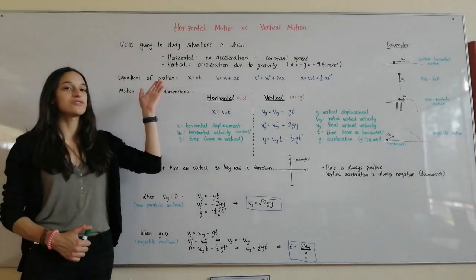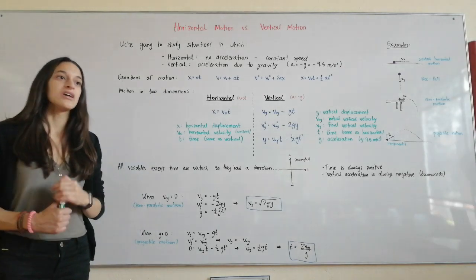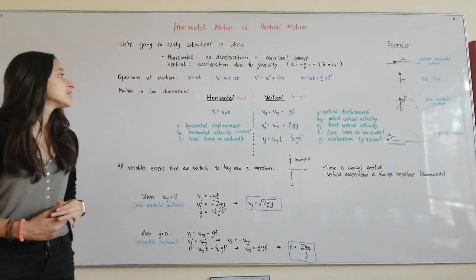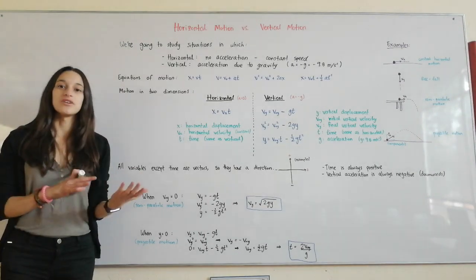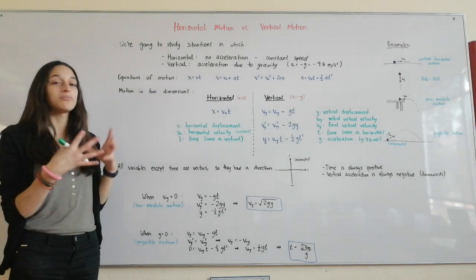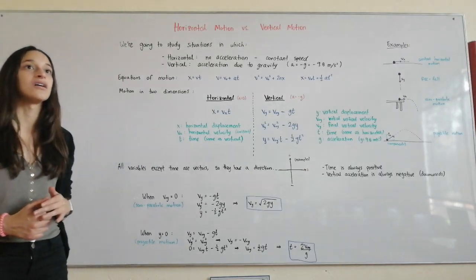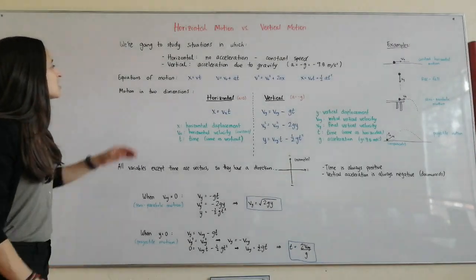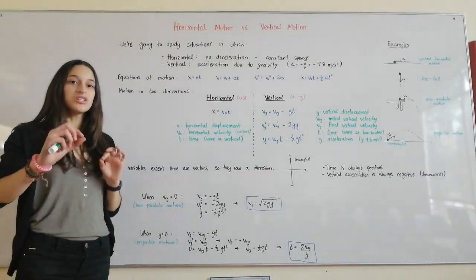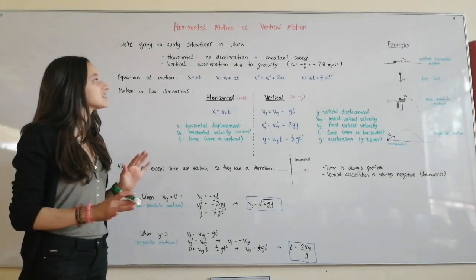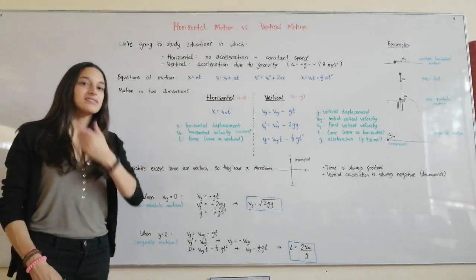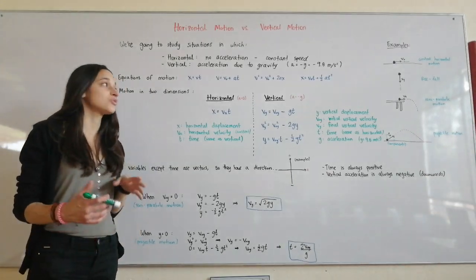Today we're going to talk about horizontal motion versus vertical motion — motion in two dimensions, both horizontal and vertical. Until now, we've learned about horizontal motion apart from vertical motion, but now we're going to see what happens when we combine the two. We're going to study situations where the horizontal motion is constant speed with no acceleration, and the vertical motion has acceleration due to gravity, sort of like free fall.